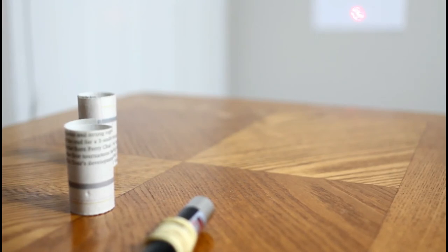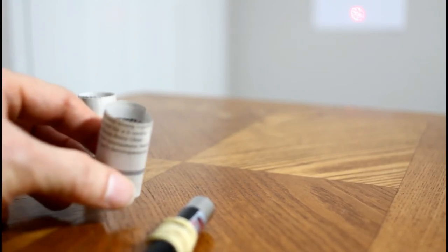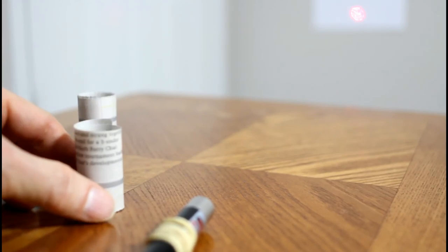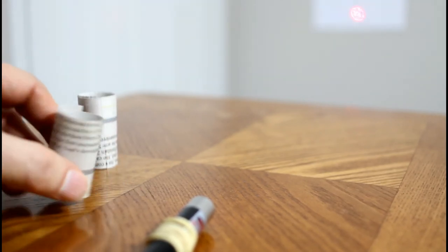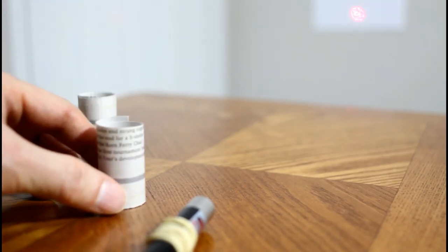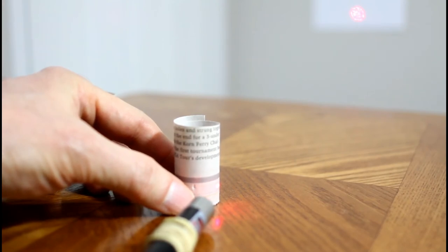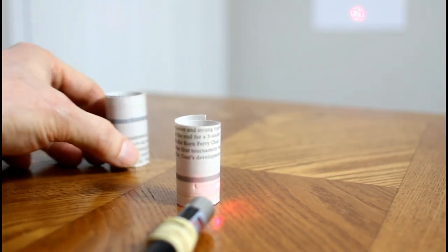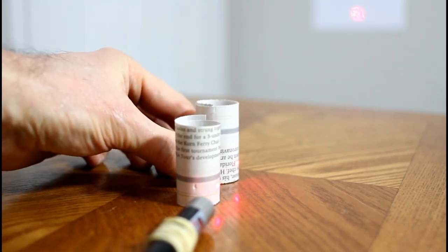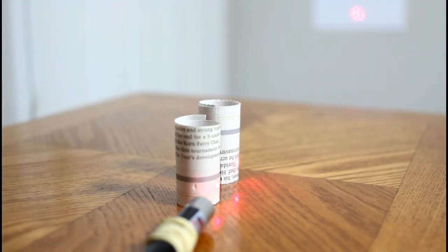If you don't have bars of soap or razor blades around, you can also use two pieces of newspaper. Here I rolled up two strips of newspaper and taped them together to hold them. You can put the first rolled up piece of paper into the beam, and then put the second one in, and that'll create a diffraction pattern also.